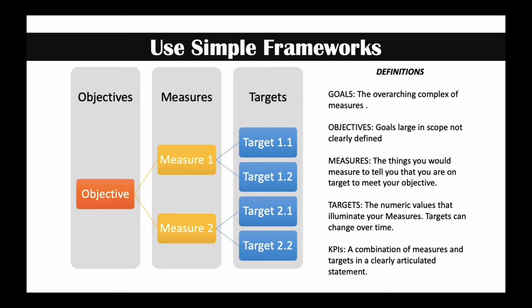Lastly, targets are the numeric values that will illuminate your measures. These often change over time — we can have a target for one period and then a target for the next period, all relating to the same measure. KPIs are a way of pulling them together, so we get a nice combination of measures and targets in a clearly articulated statement.